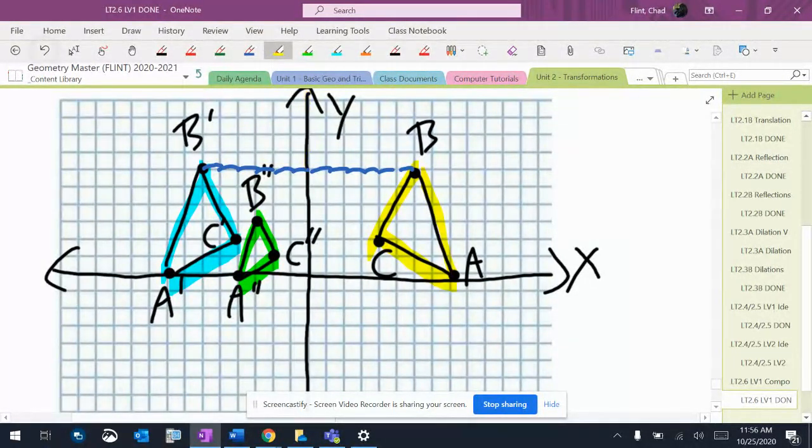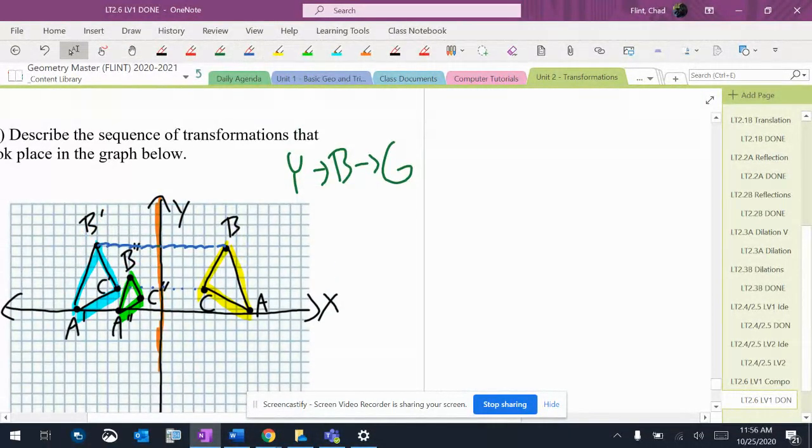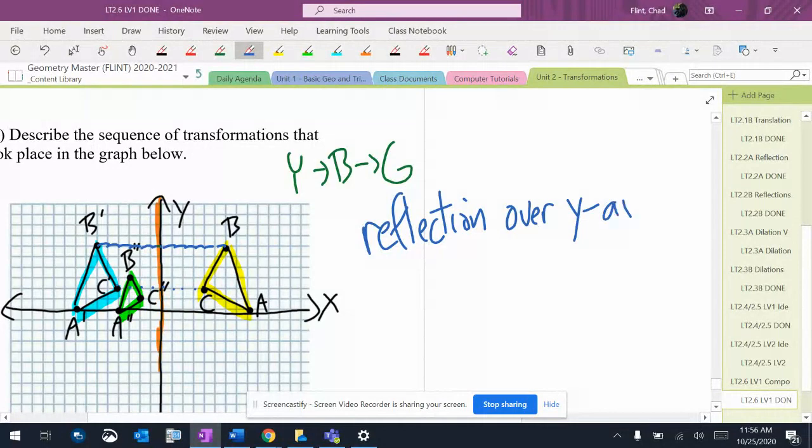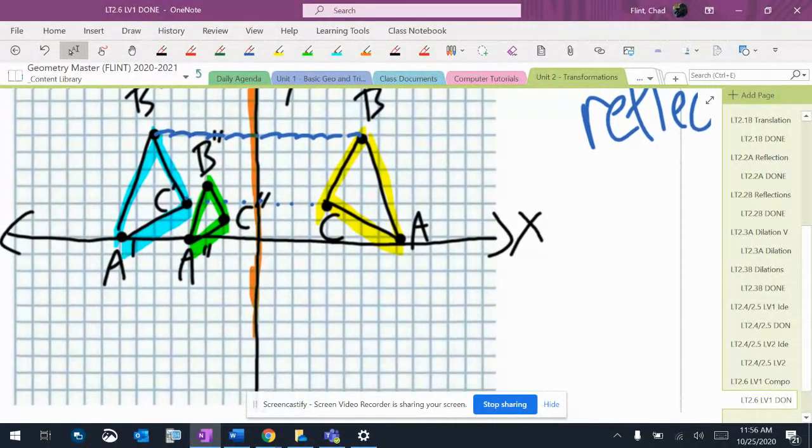Alright, because I can tell the graphs are right in the middle. Let me check. 1, 2, 3, 4. 1, 2, 3, 4. So they all work out. So we're going to reflect them over the y-axis. And then, for blue to green, which is definitely a dilation.